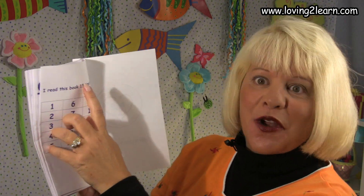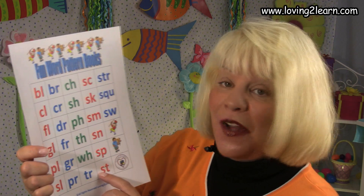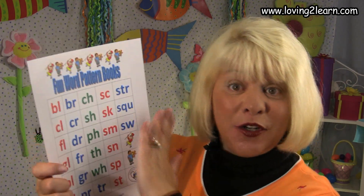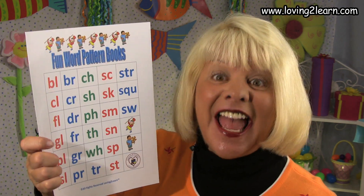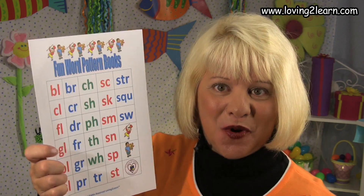I read this book 15 times. Read this book 15 times — cross out a number every time you do. Once you've read the CL book 15 times, get the fun word patterns chart and cross out the CL. Read all the other fun word patterns books and then take the checkup. This will make sure that you know the sounds to all of the fun word patterns. Wow, I am so impressed with what you're doing. Keep up the fantastic work. See you later, alligator.